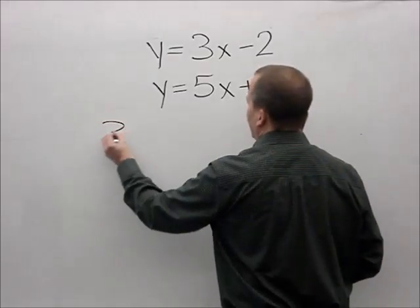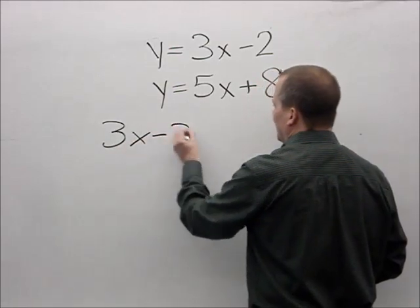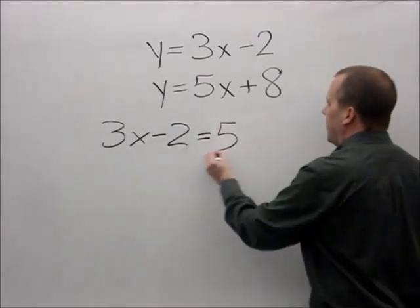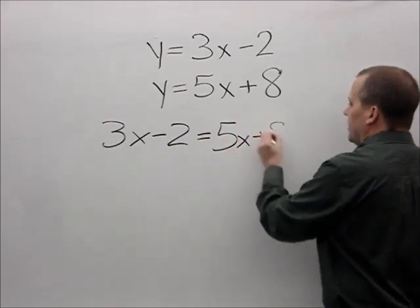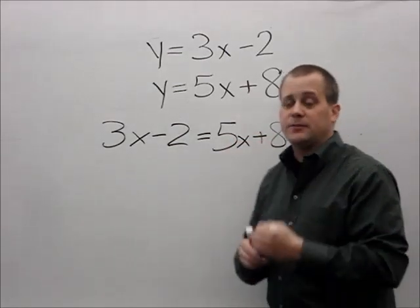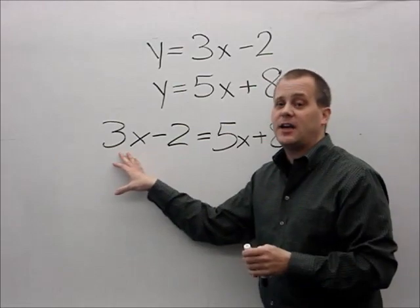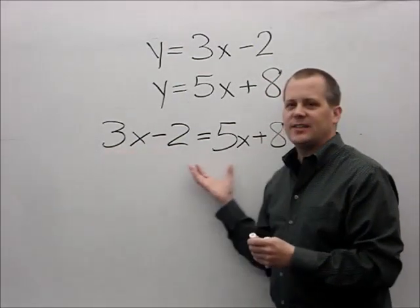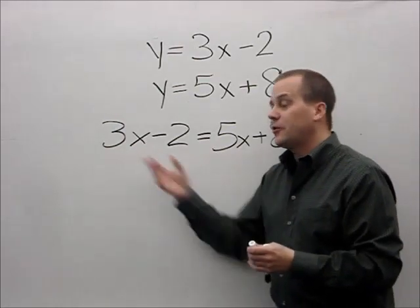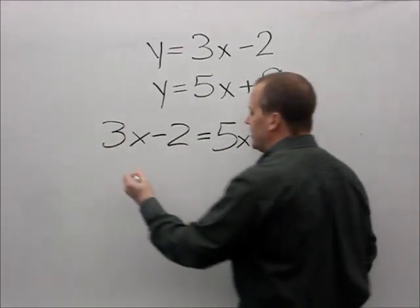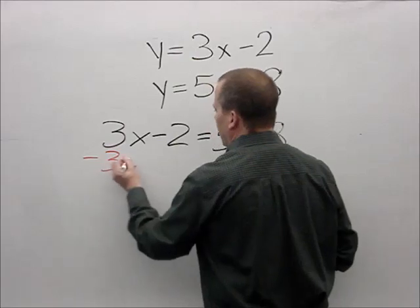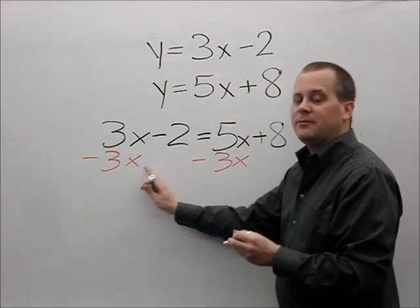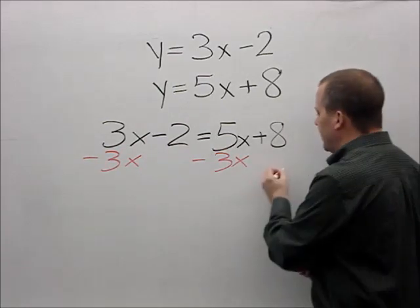I'm going to take the first equation, 3x minus 2, and make it equal to 5x plus 8. Now I ask myself: do I have an x on the left side and on the right side of the equals? The 3x is smaller, so I'm going to subtract 3x from both sides — when I subtract from one side I need to do the same to the other side.